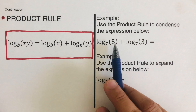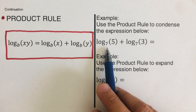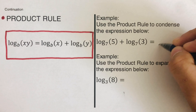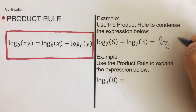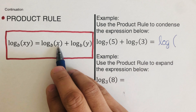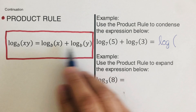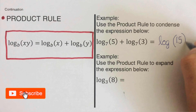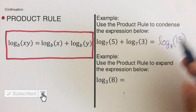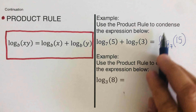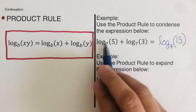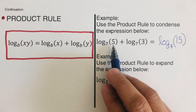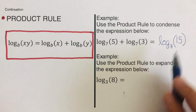We do this example backwards: since we have log of five to the base seven plus log of three to the base seven, we can rewrite this as log of five times three, to the base seven. That gives us log of 15 to the base seven. This is the condensed version — we collapse it into one logarithmic expression.